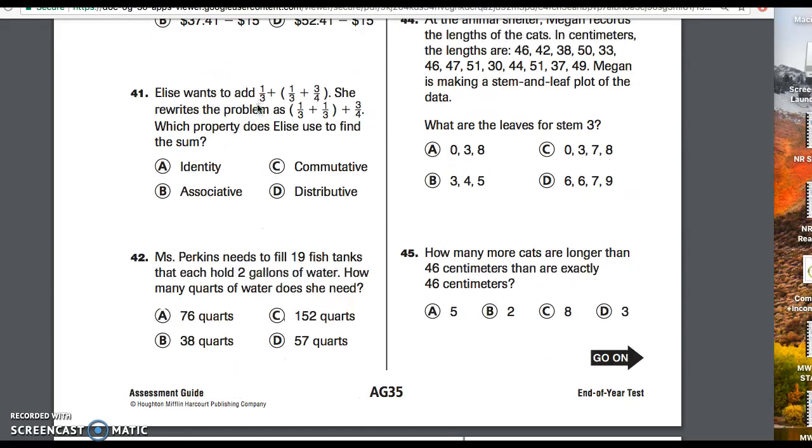Number 41. Elise wants to add one-third plus one-third plus three-fourths. She rewrites the problem as one-third plus one-third plus three-fourths. Which property does Elise use to find the sum? Identity, associative, commutative, distributive.